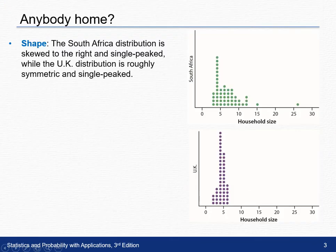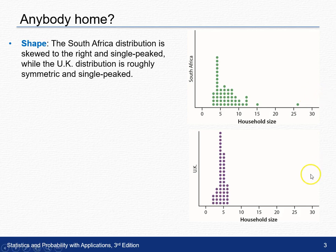As you can see, the shape of the South African distribution is skewed to the right. Remember, look to see where this slopes off to — it slopes off to the right, and it's single peaked. While the UK is also single peaked, but it is roughly symmetric.